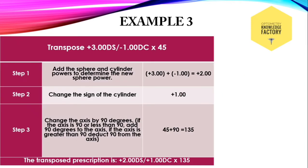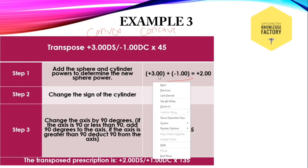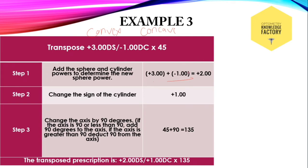Example 3: transpose plus 3 diopter sphere with minus 1 diopter cylinder at 45. Here the spherical component is convex and the cylindrical component is concave, so the signs are different. In this condition, we subtract the lower digit from the greater digit. The greater digit is 3 and the lower is 1, so 3 minus 1 is 2 diopter, and we give the sign of the greater digit, which is plus. Plus 2 is the spherical component of the transposed form.